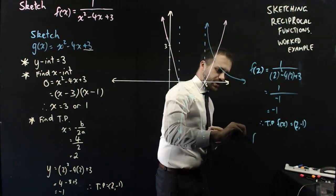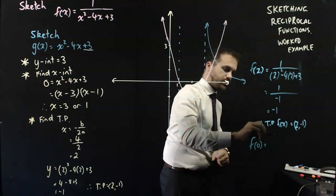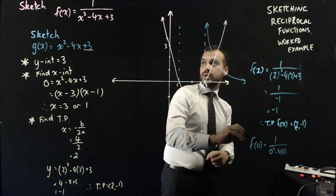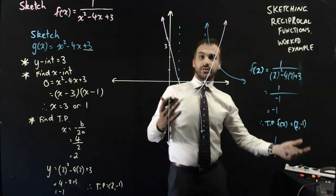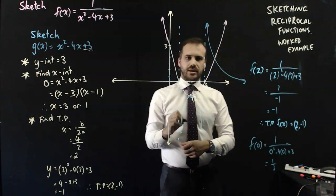is equal to one over zero squared minus four times zero plus three, which is one over three. One third, which is about there.